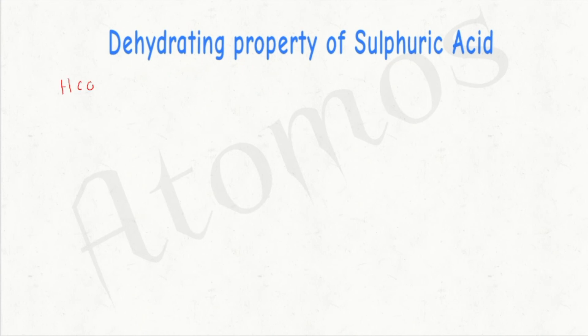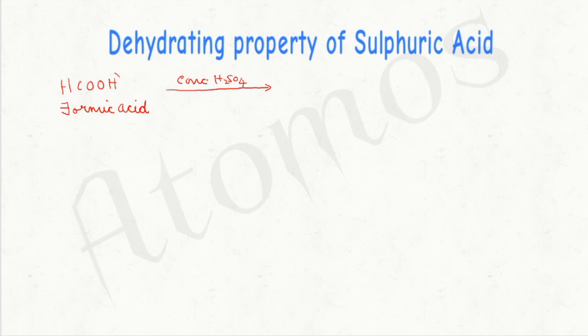What do you mean by dehydrating agent? Let's look at some examples. The formula of formic acid, also known as methanoic acid, is HCOOH. When formic acid is treated with concentrated sulfuric acid, it removes the OH and H from formic acid. As a result, together they become one molecule of water, and the remaining gas produced is carbon monoxide.